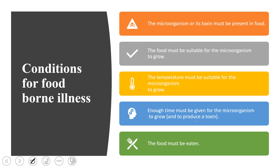Next, temperature must be optimum for bacterial growth. For mesophiles, that is around 37 degrees centigrade. Temperatures between 0 and 4 degrees centigrade result in lesser growth of microorganisms. Additionally, enough time must be given for bacteria to grow and produce toxins, and that food must then be consumed by humans. These are the conditions for foodborne illness.